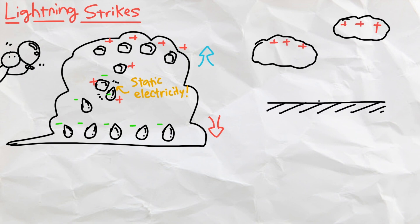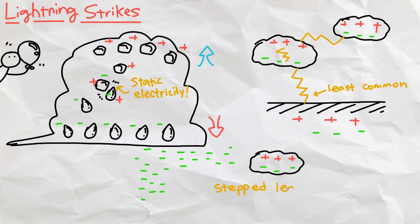At this point, three types of lightning can occur, either between clouds, within clouds, or between clouds and the ground, which is surprisingly the least common type. If there is strong enough separation between the charges, negative charges form a path in the air, called a stepped leader, towards positive charges.